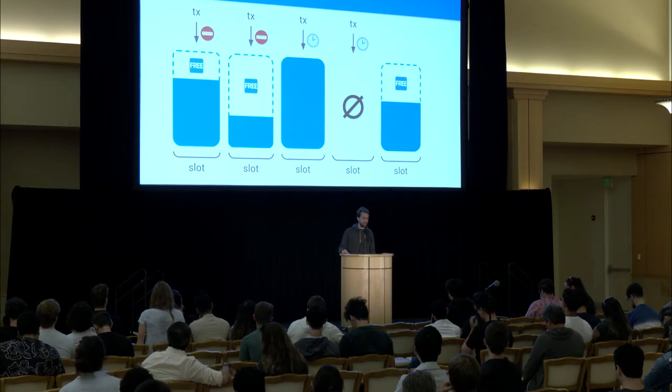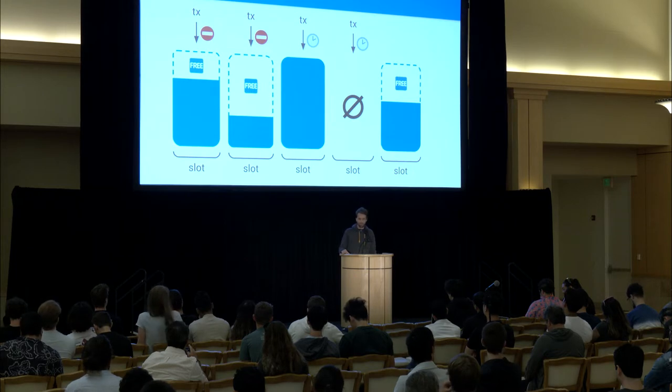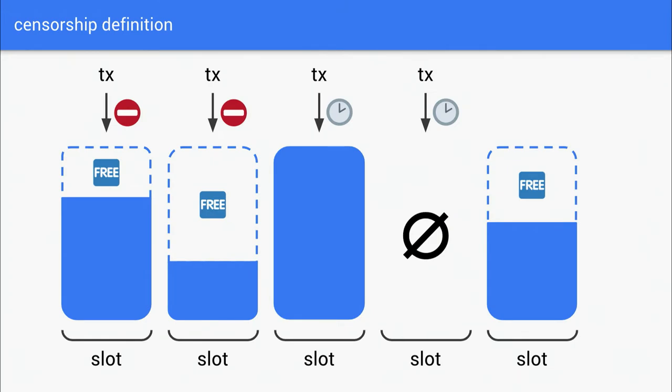Two edge cases: if the block is full, that doesn't count as censorship, because your transaction might not be the most valuable one to include right now. It's also not sufficient to just look at the tip — you need to take into account DMEV, so transactions with lower tips than yours could still get included first. And if there's no block at all — a so-called empty slot — that also doesn't count as censorship, because the validator is potentially offline.